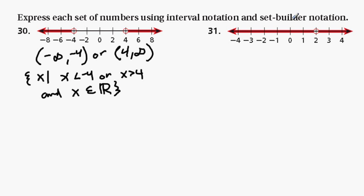Okay, so that's 30. And 31 here, these are all numbers except 2. So x is not equal to 2.